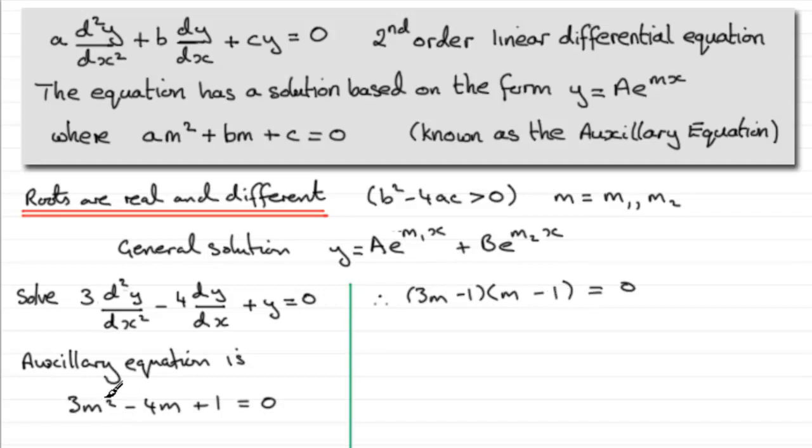You'd find that b squared minus 4ac, if we did do the discriminant, it would be positive, greater than 0, leading us to two different roots. Those roots are going to be m equaling 1/3 and m equaling 1.